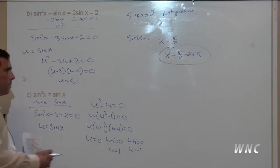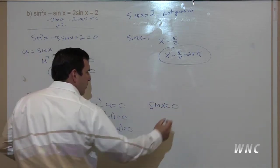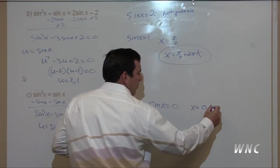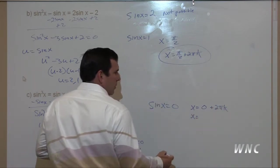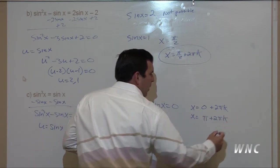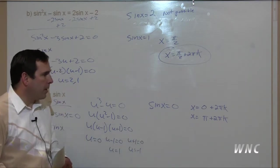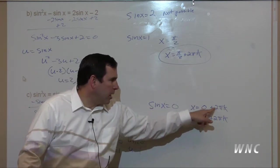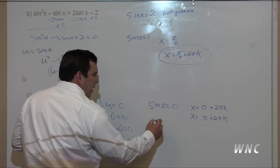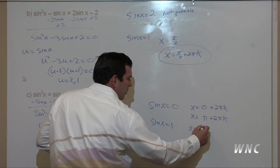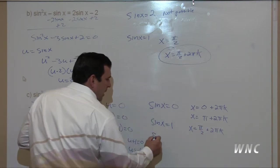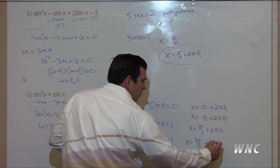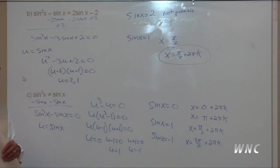Substituting sine back in: sine of x equals zero, sine of x equals one, and sine of x equals negative one. For sine x equals zero, that occurs at x equals zero plus two pi k and x equals pi plus two pi k — or simply x equals zero plus pi k. Sine of x equals one occurs at x equals pi over two plus two pi k. Sine of x equals negative one occurs at x equals three pi over two plus two pi k. Remember, k can be any positive or negative integer.